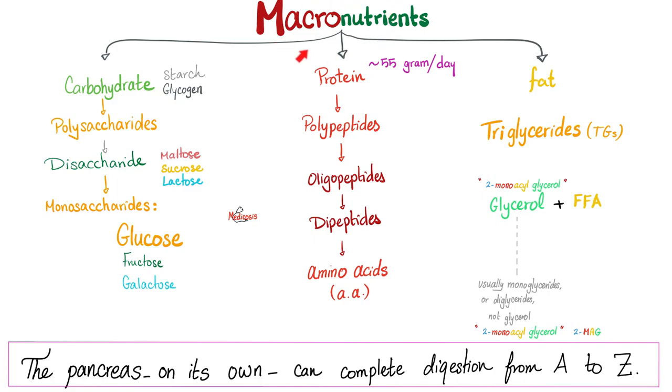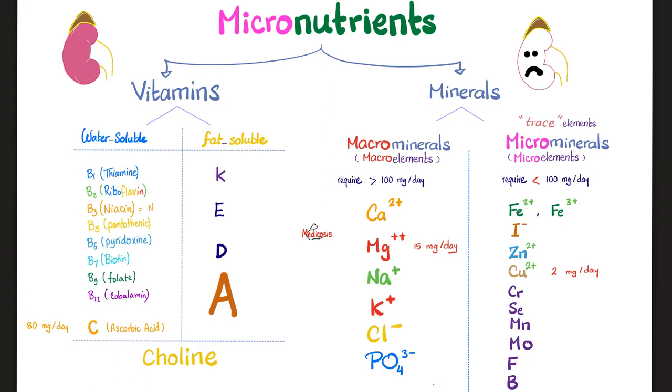We divide nutrients into macronutrients and micronutrients. Macronutrients: carbohydrates, proteins, and fats. Why do you call them macro? Because you need them in a huge amount every day. How about micronutrients? You need them in a lesser amount every day.